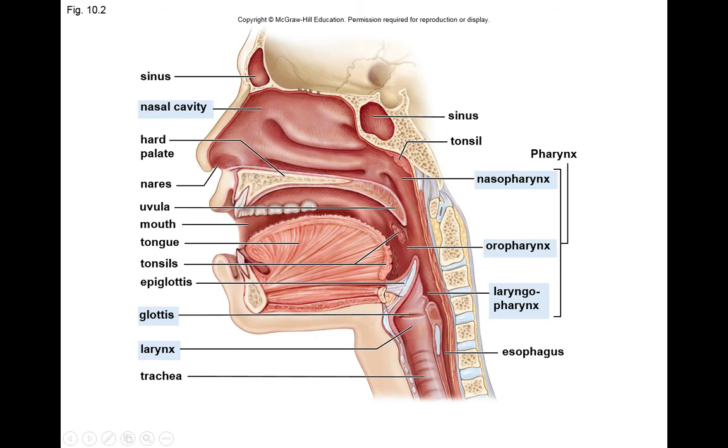The trachea is held open by rings of cartilage, which is helpful for keeping that airway open.